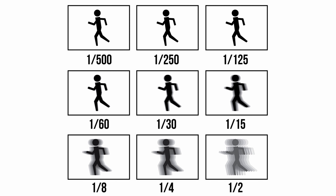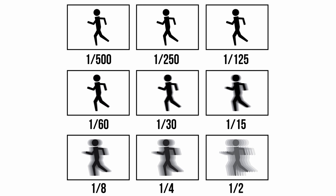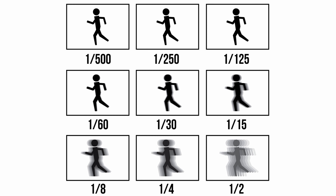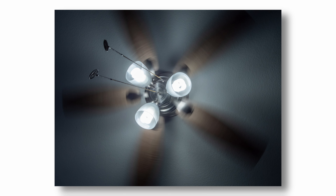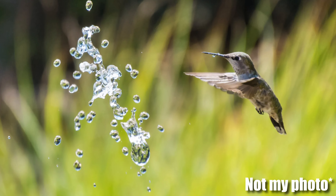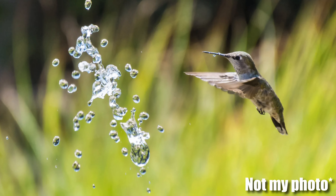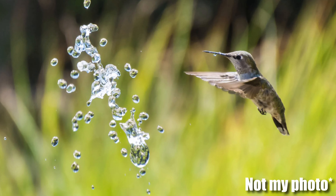The slower your shutter speed, the more motion blur you are going to get. This is useful if you want to show motion in your photos. Faster shutter speeds allow you to capture fast-paced action like racing, cars, birds, etc.